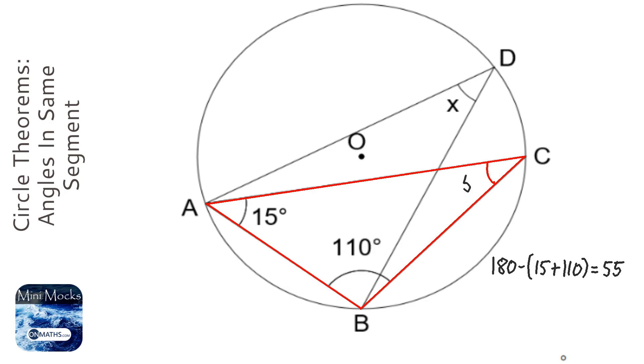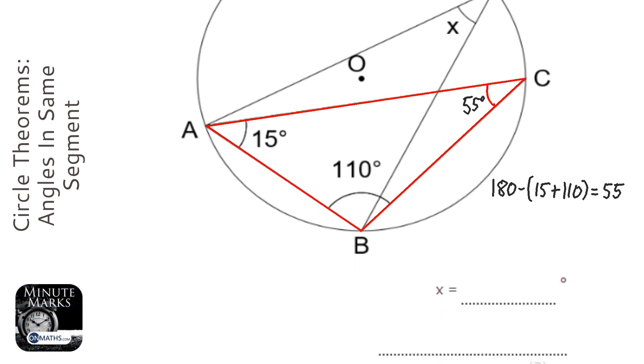So that's 55 there, and then I just need to use a circle theorem to finish it off. The circle theorem says that angles from the same chord are equal, so that's also going to be 55.